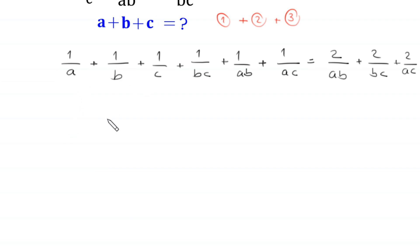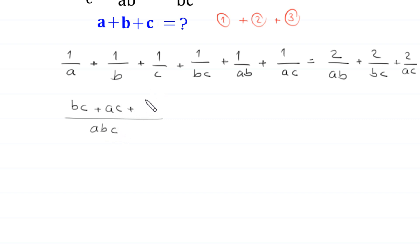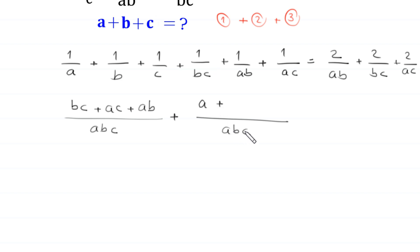From these three terms on the left, the LCM is abc. So abc divided by a is bc, giving bc times 1/bc; divided by b is ac, giving ac times 1/ac; divided by c is ab, giving ab times 1/ab. From the next three terms, the LCM is abc: divided by bc is a, giving c times 1/c; divided by ab is c, giving c times 1/c; divided by ac is b, giving b times 1/b.